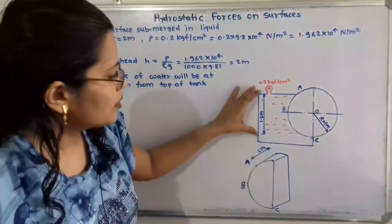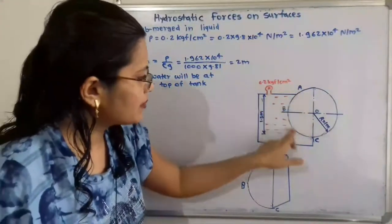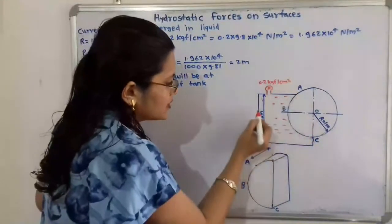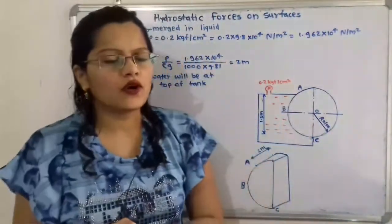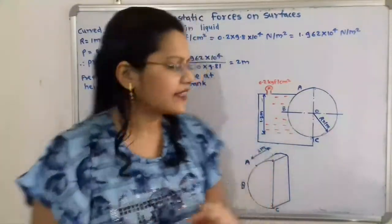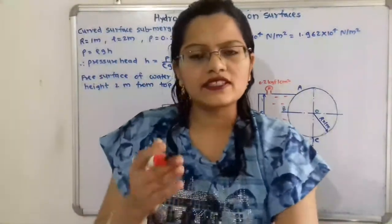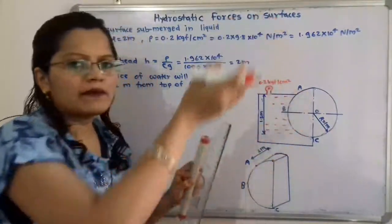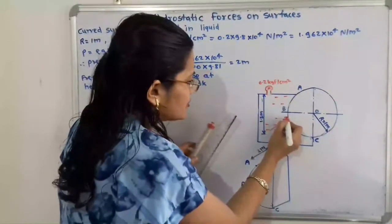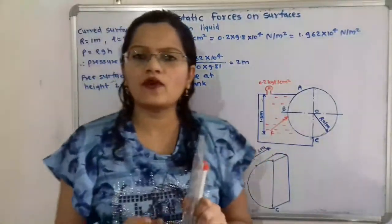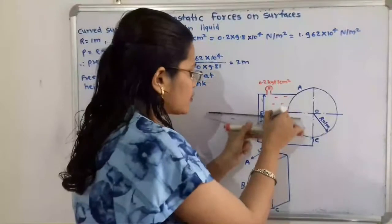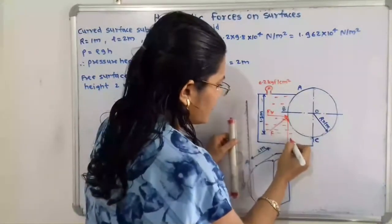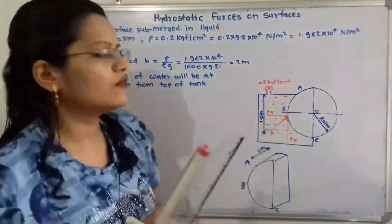The height from point A to point C — that is, the curve ABC which is in contact with water — is given as 1.5 meters. We need to find the components of force acting on this curved surface ABC. Since this is a curved surface, the pressure force F applied by the water acts in an inclined direction. We resolve this force into two components: horizontal component Fx and vertical component Fy.